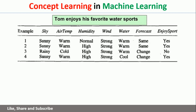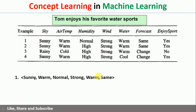Let us say that we have been given four training instances with six attributes, and 'enjoy sport' is the target variable. Given these training examples, we need to identify one solution which fits them. The question is how the solution will look. For example, this is one possible solution: the first attribute sky can take the value sunny, air temperature can take warm, and so on.